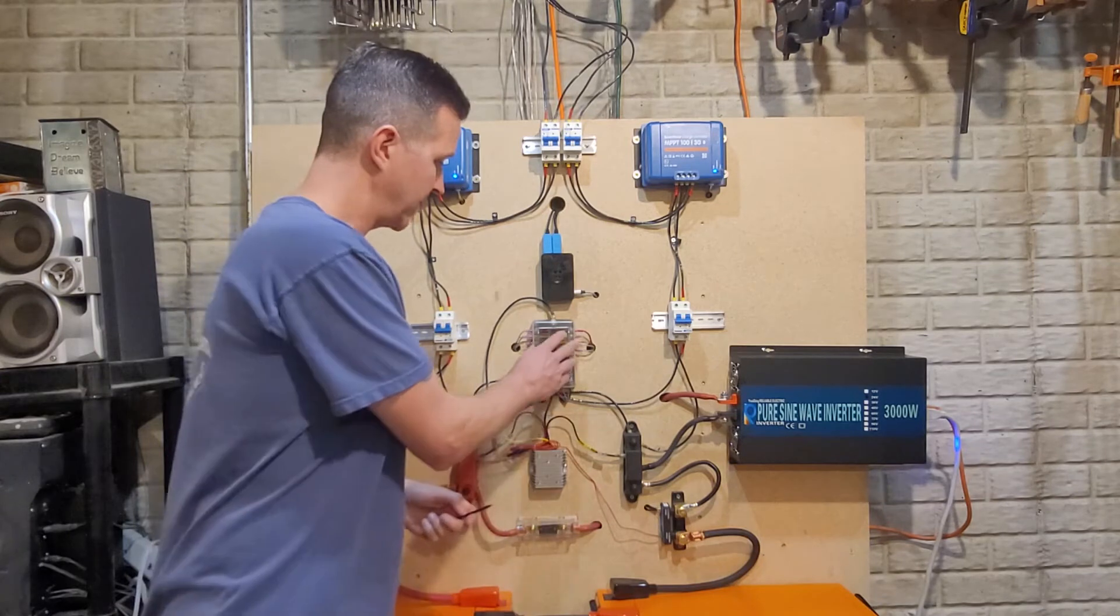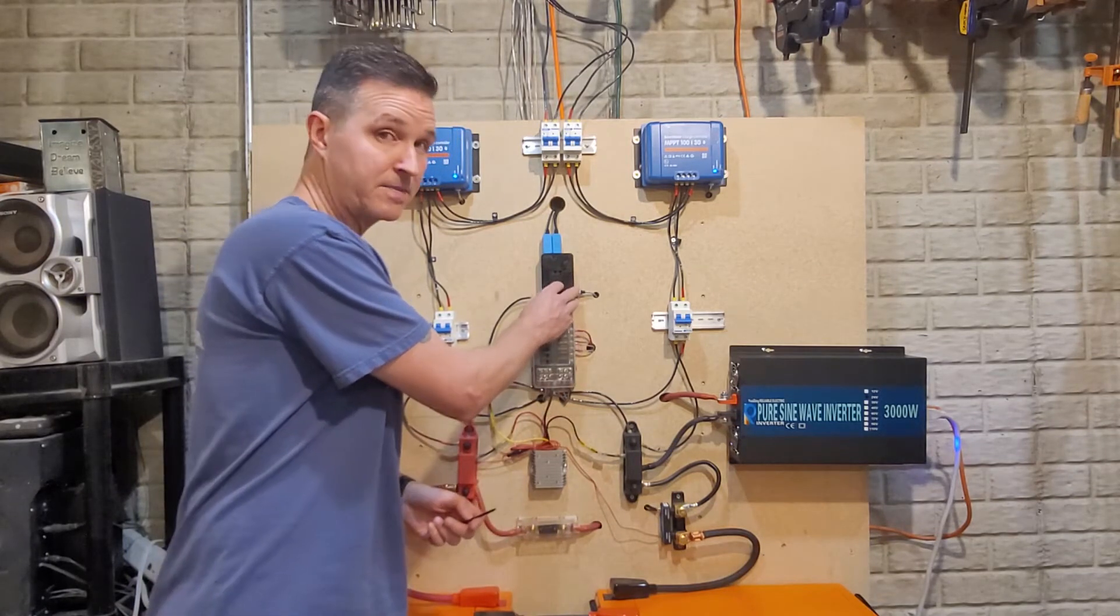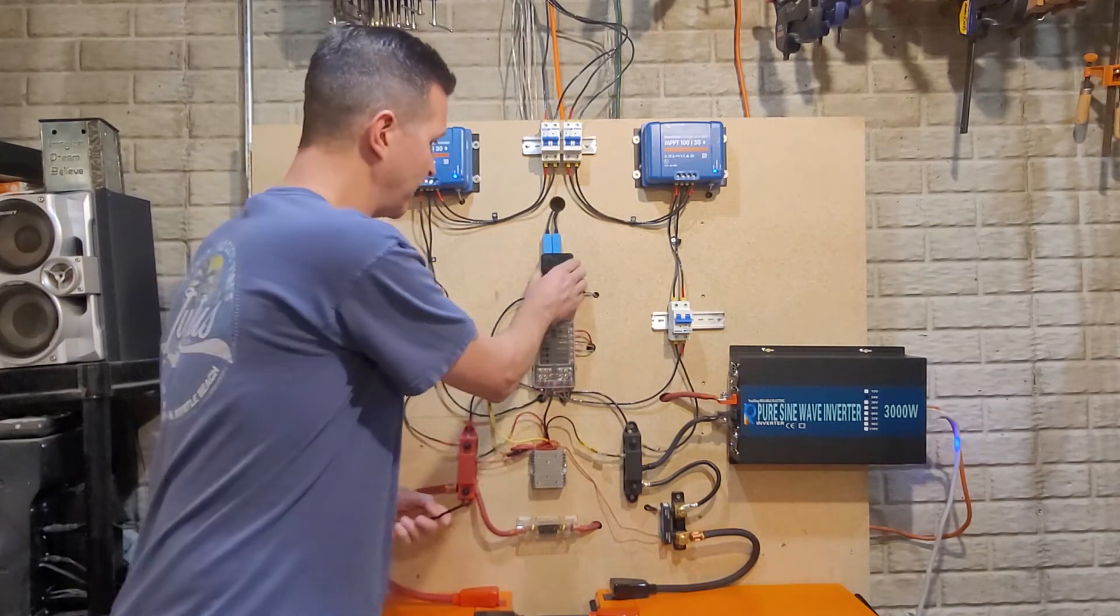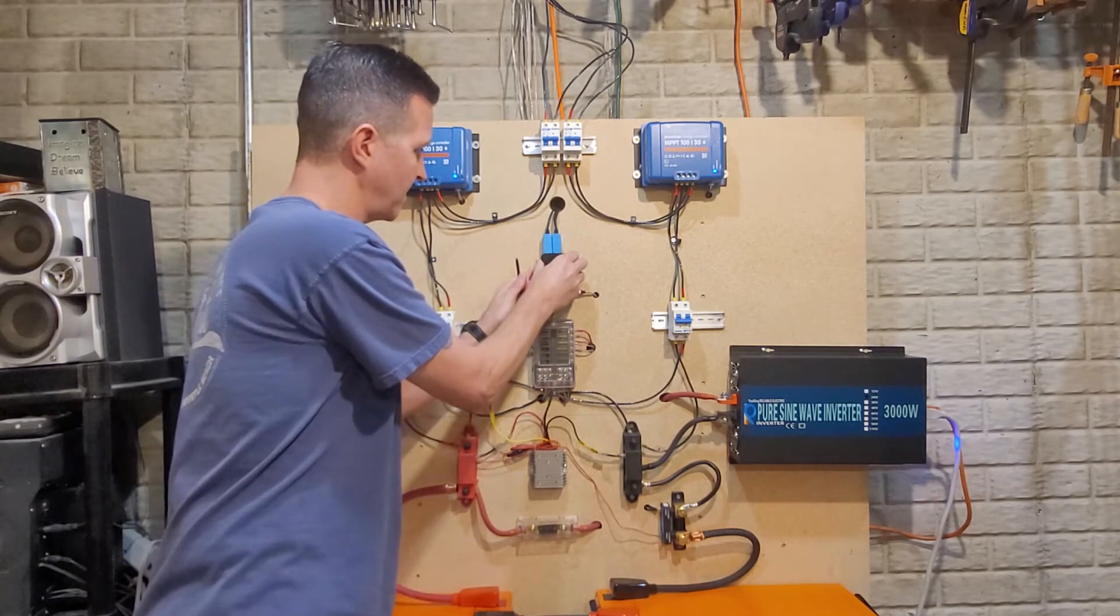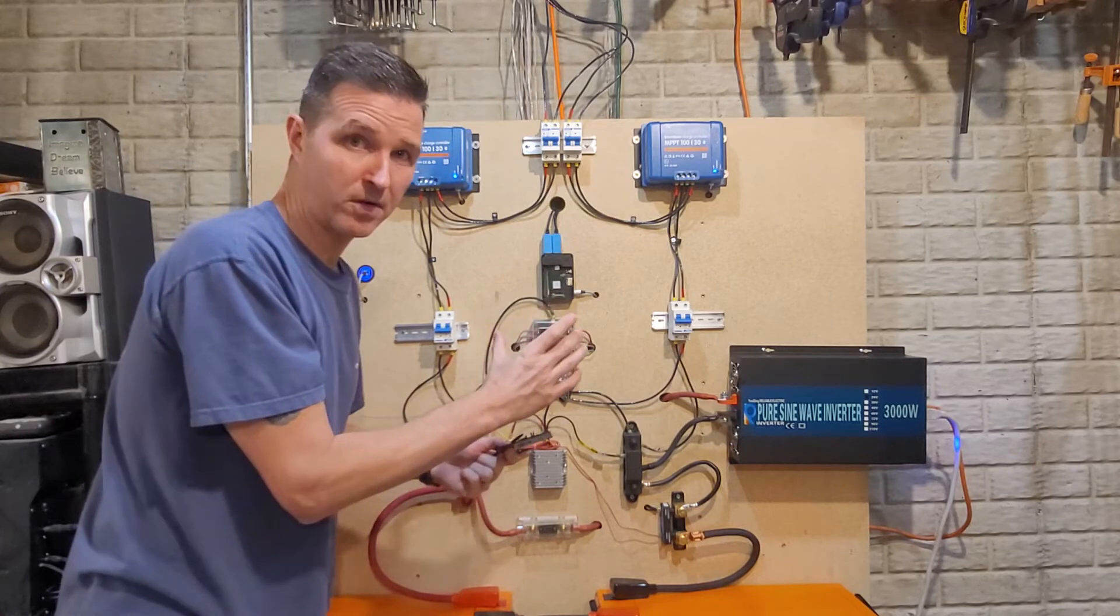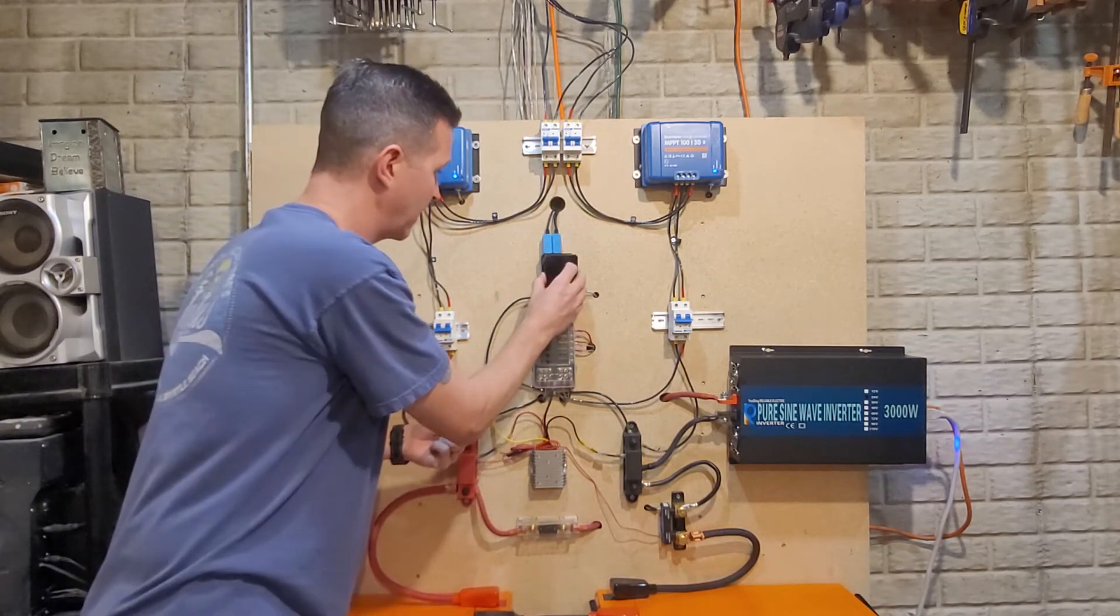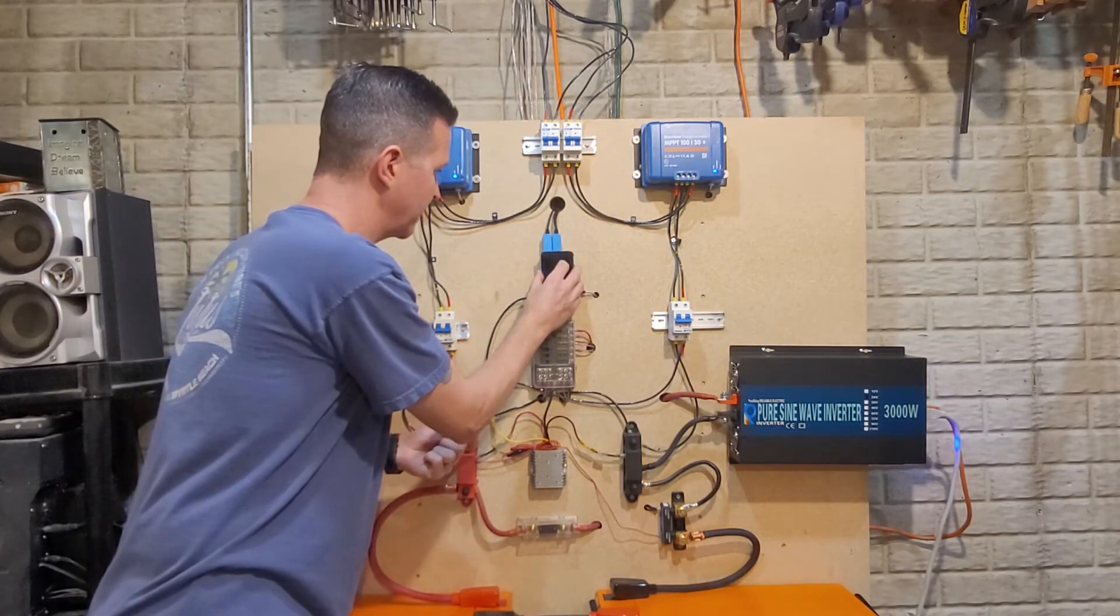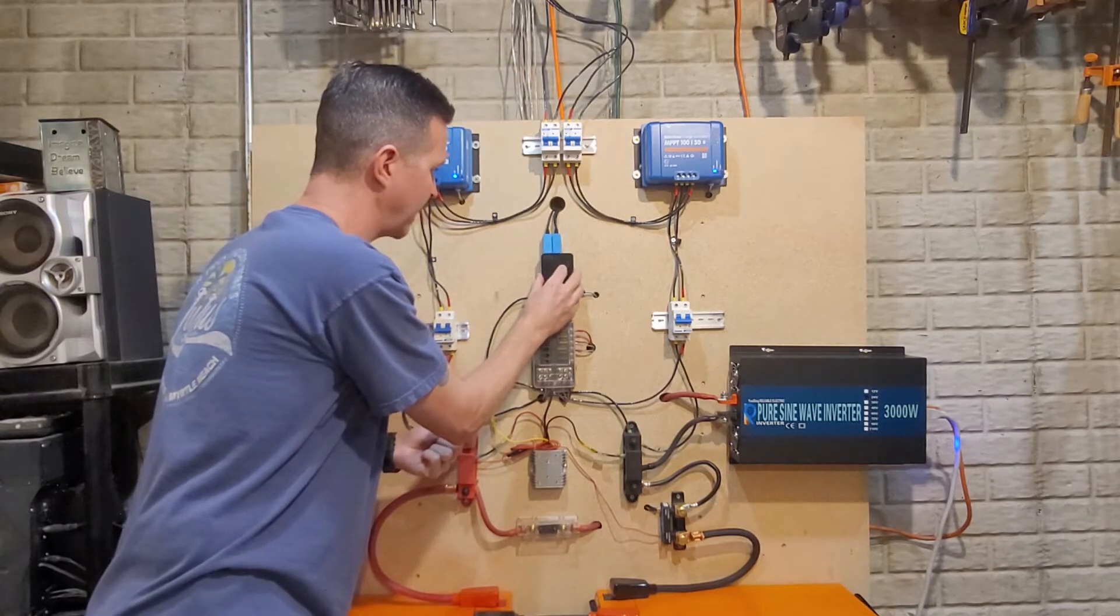Like I said, this DC block does power my Raspberry Pi as well. What this is - let me take this case off - is a little computer. What this little computer does is monitor the entire system.